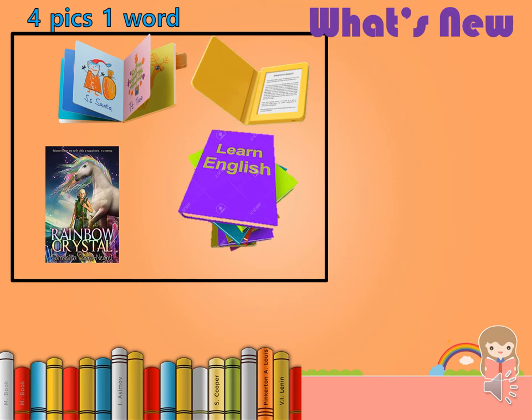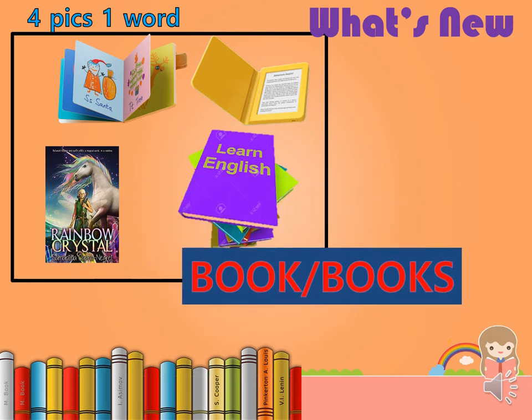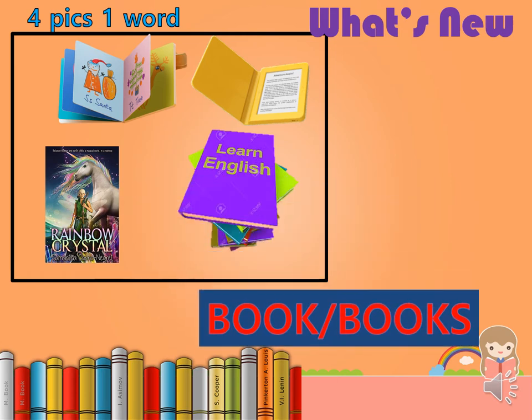Are you eager to learn something new? Let's proceed to our next task: 'What's New.' Let's answer this puzzle — four pictures, one word. What word is common to the pictures? Here's another clue: most of these are found in the school library. If your answer is 'book' or 'books,' then you got it! Do you love reading books? What is your favorite book? What do you think is the oldest printed book in the world? Keep going and you will know the answer!